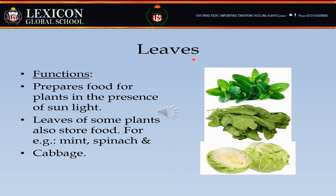Leaf is also a part of a plant and is found in different shapes, sizes, and colors. The function of leaves is to prepare food for the plant in the presence of sunlight — this process is called photosynthesis. Leaves of some plants also store food, for example mint, spinach, and cabbage.